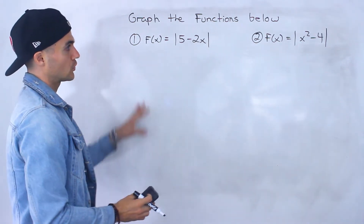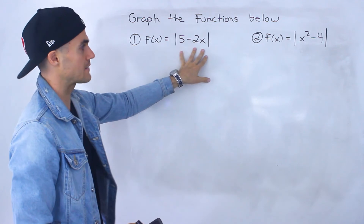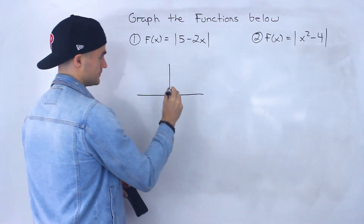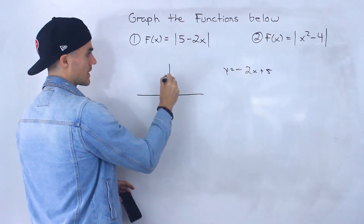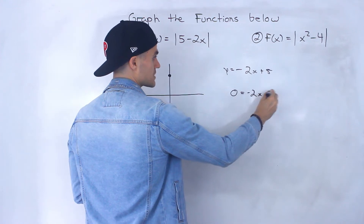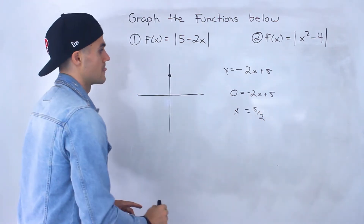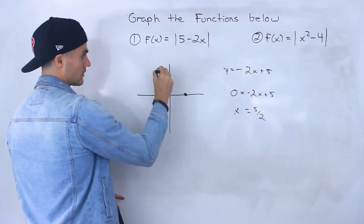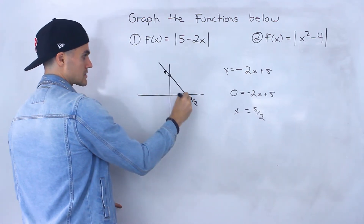One way to graph something like this is to graph just the expression inside the absolute value — so just 5 minus 2x, forgetting about the absolute value initially. If we graph 5 minus 2x, written as negative 2x plus 5, the y-intercept is 5. For the x-intercept, we set negative 2x plus 5 equal to 0 and solve to get x equals 5/2, which is 2.5.